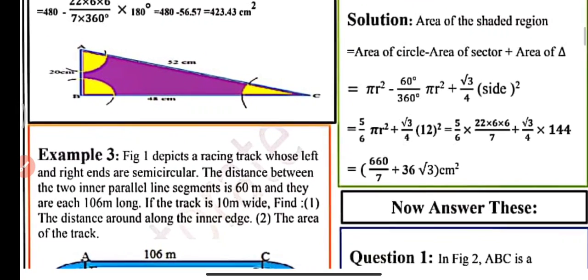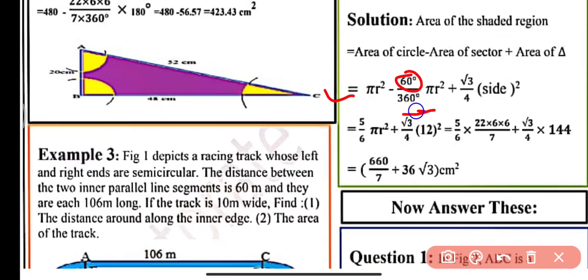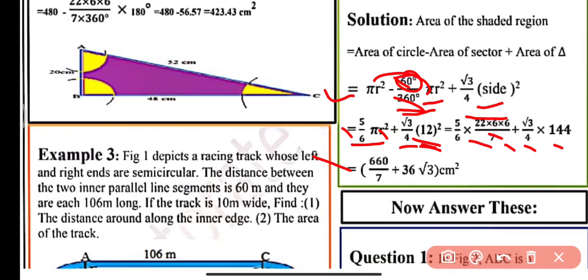Area of circle is πr². Applying the formula: πr² minus θ/360 × πr². Since triangle is equilateral, the angle is 60°, so 60/360 × πr². Plus area of equilateral triangle = √3/4 × side². Since 60/360 = 1/6, the circle minus sector simplifies to 5/6 × πr². So: 5/6 × 22/7 × 6 × 6, plus √3/4 × 12² (which is 144). After simplifying we get 660/7 + 36√3 cm² as the area of the shaded region.